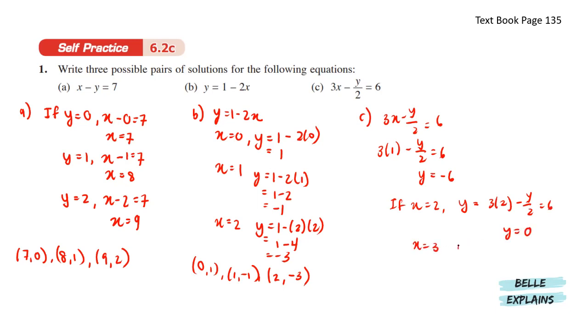So if x equals 3, we get the value of y again which is at 6. The possibilities here are (1, negative 6), (2, 0), and (3, 6).